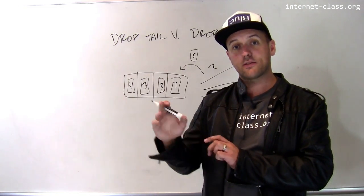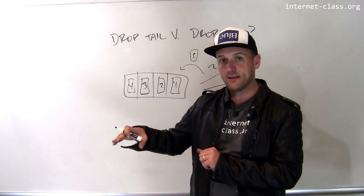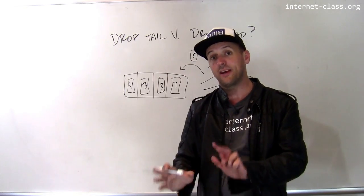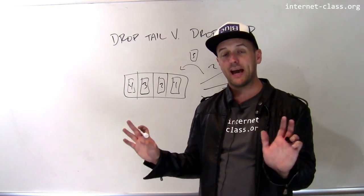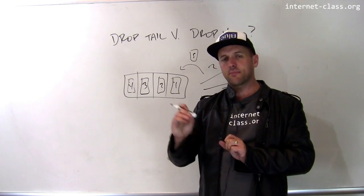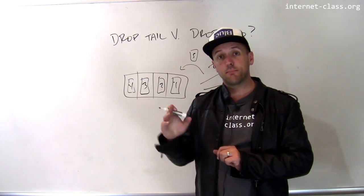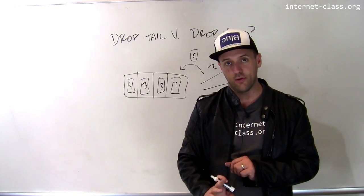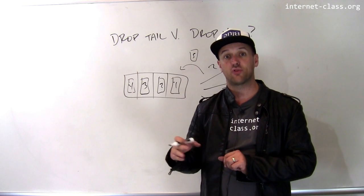That's how routers—this is the only signal that the routers can send to people that are sending data through them is by dropping packets. A packet drop is interpreted by one of the endpoints as a sign that something is wrong along the routing path, and the typical response to that is to slow down and reduce the rate at which I'm trying to use the network.